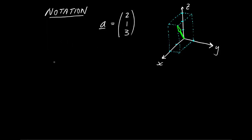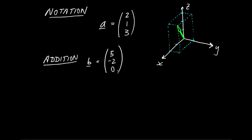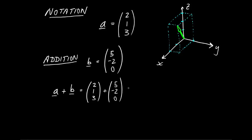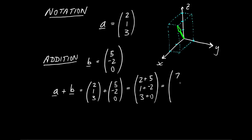The simplest thing you might want to do with a couple of vectors is add them up. Let's think about vector addition. Given vector A = (2, 1, 3) and vector B = (5, -2, 0), to add them we simply add the first component of A to the first component of B, and so on down the list. So we get 2+5, 1+(-2), and 3+0, giving us (7, -1, 3).